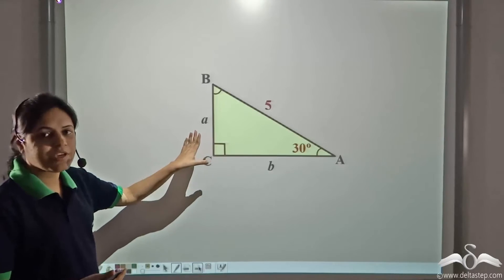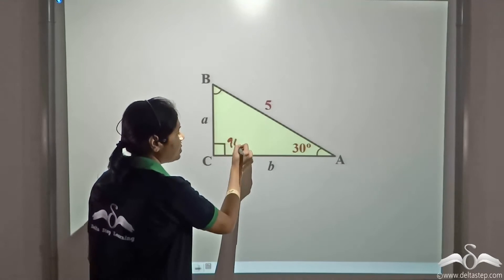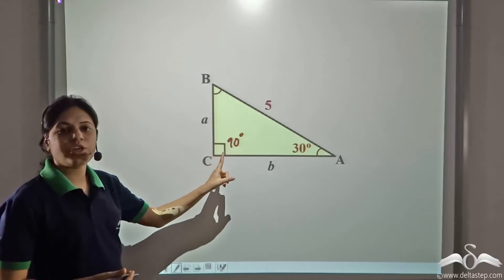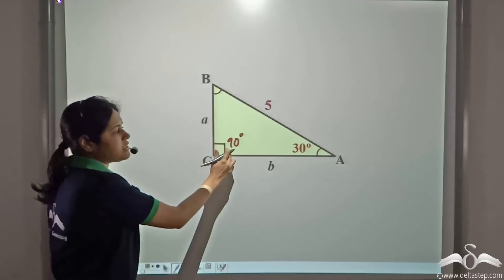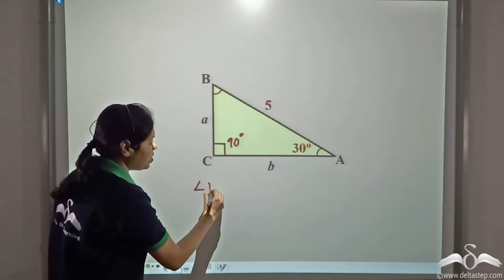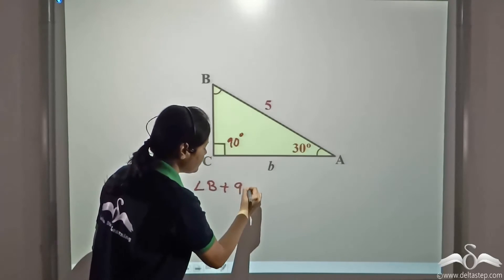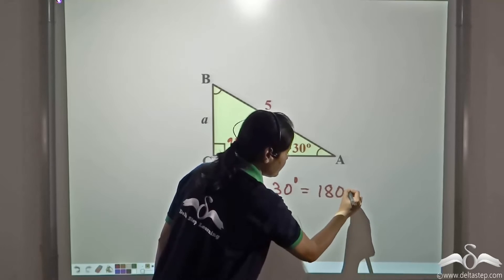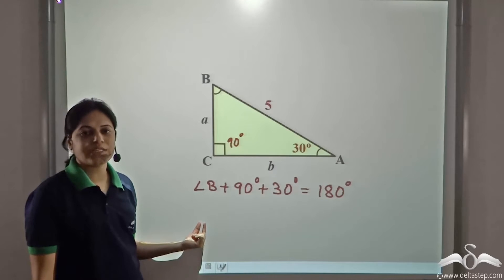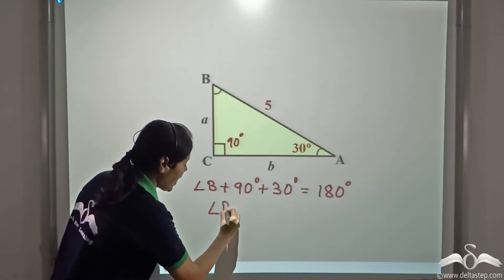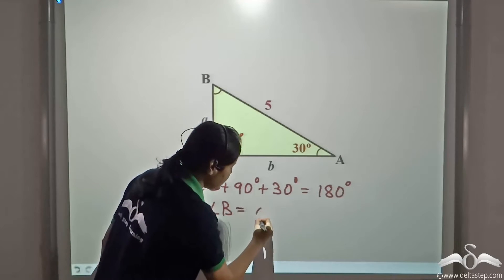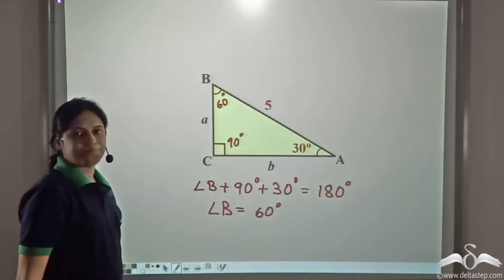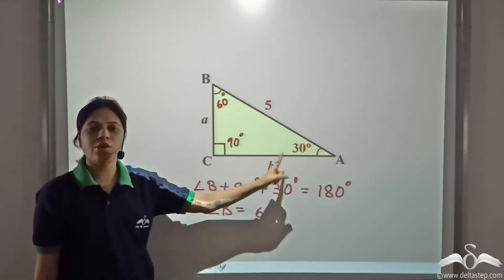Let us see. Since we know that this is a right angle triangle, this angle is 90 degrees and this angle is 30 degrees. So this angle will be equal to 180 minus 90 minus 30. Angle B plus angle C, which is 90 degrees, plus angle A, which is 30 degrees, is equal to 180 degrees. From here, we can find angle B as 180 minus 120 degrees, that is 60 degrees. So yes, if we have one angle, we can find the measure of all the angles.